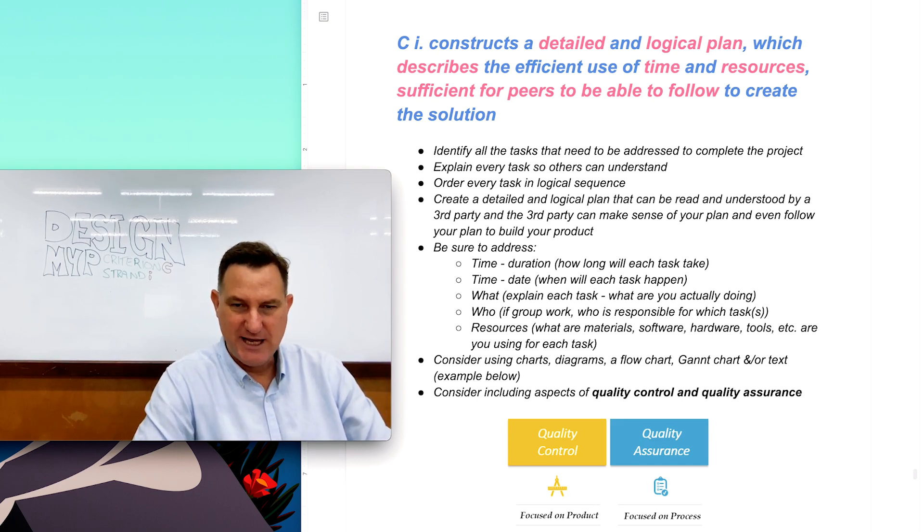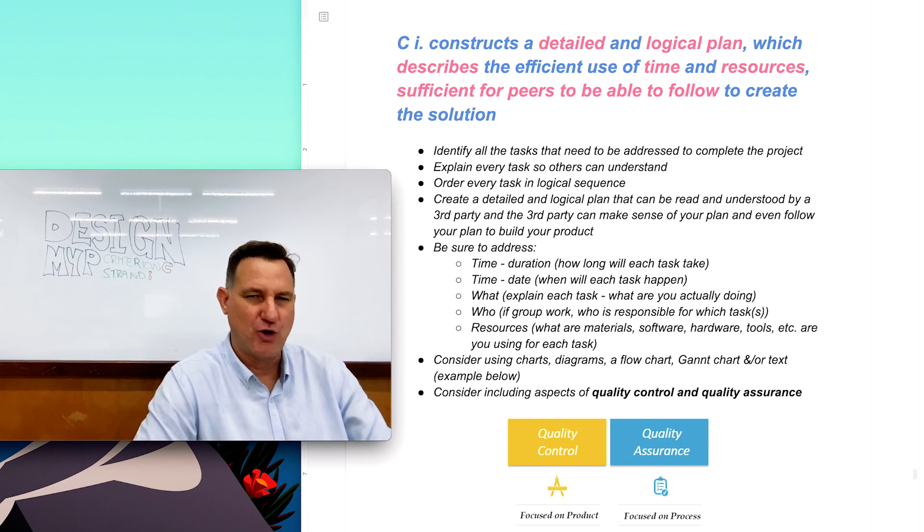The next thing is, what are you actually going to do? Remember, somebody else, you have to write it in a language that somebody else will understand your plan. Also, if you're doing a group project or other people are involved, you need to talk about who is actually doing the task. So back to the letterbox example, perhaps you're not allowed to use the saw, your teacher has to use it. So therefore you will say, teacher will cut the wood.